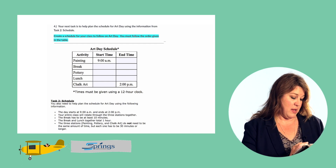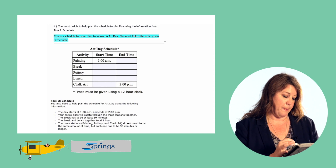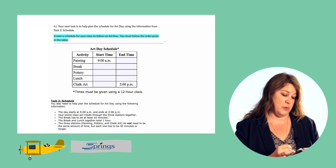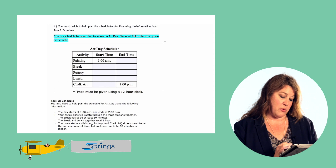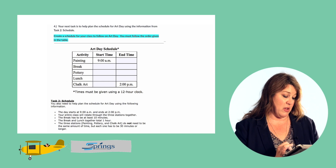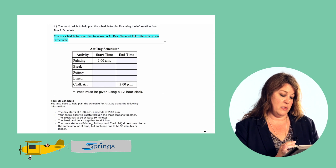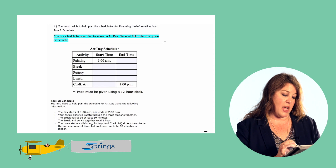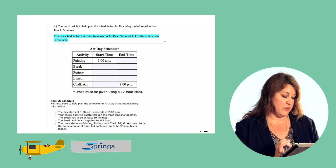The first piece of information is that the day starts at nine and ends at two, so we have a start time of nine and an end time of two. Next, your entire class will rotate through the three stations together, meaning they're going to go from painting to their break to pottery to lunch to chalk art. The end time for each activity needs to be the same as the start time for the next activity, so they go right from one activity to the next.